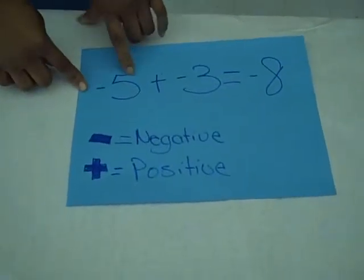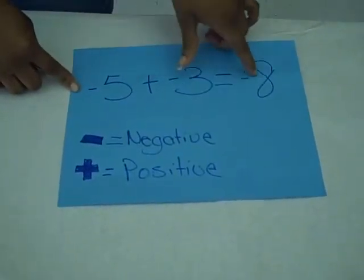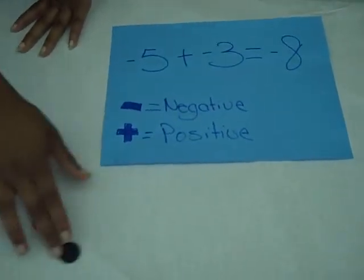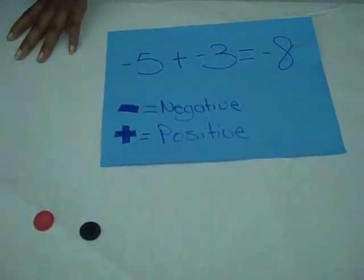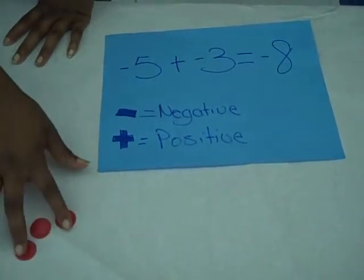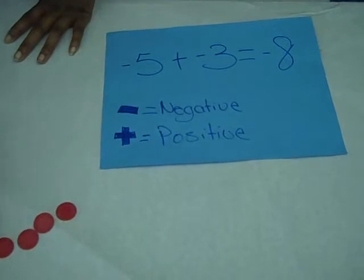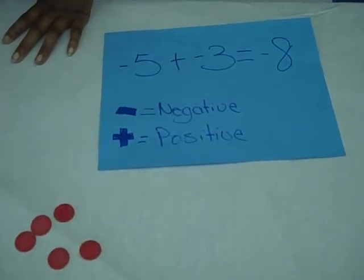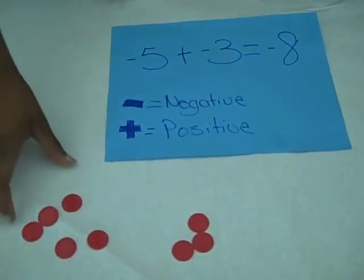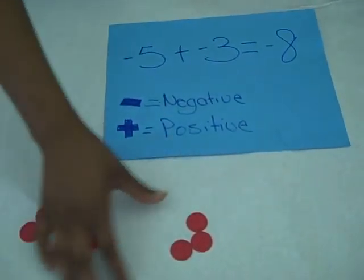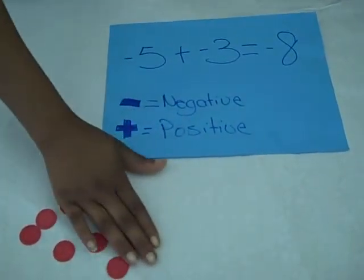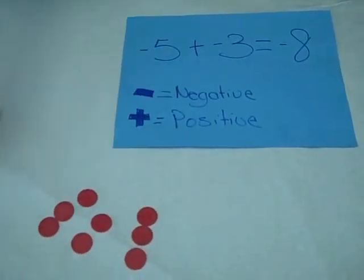Negative five plus negative three equals negative eight. The red is the negative and the black is the positive. So five negatives plus three negatives will be eight negatives, because all the reds come together — all the negatives come together — which will make it eight.